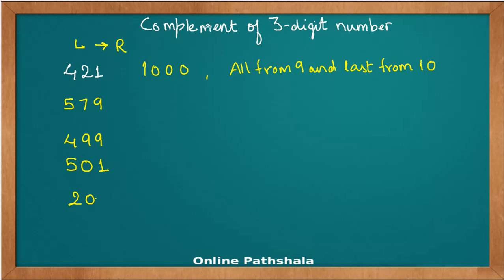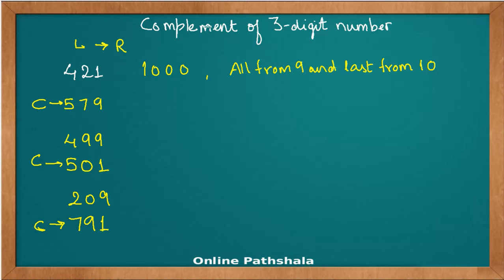One more example: 209. I'll write C for complement. So 9 minus 2 is 7. There is a 0 here — you still subtract from 9, so 9 minus 0 is 9. And the last digit: 10 minus 9 is 1. Therefore 791 is the complement of 209.